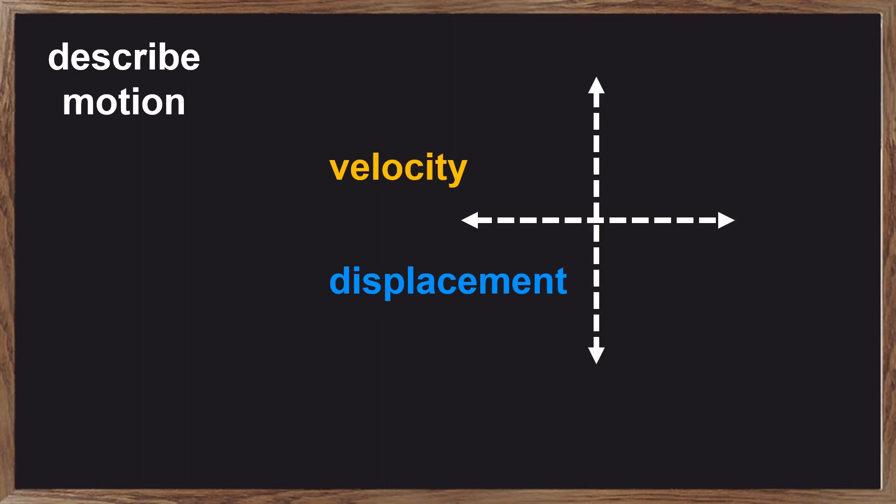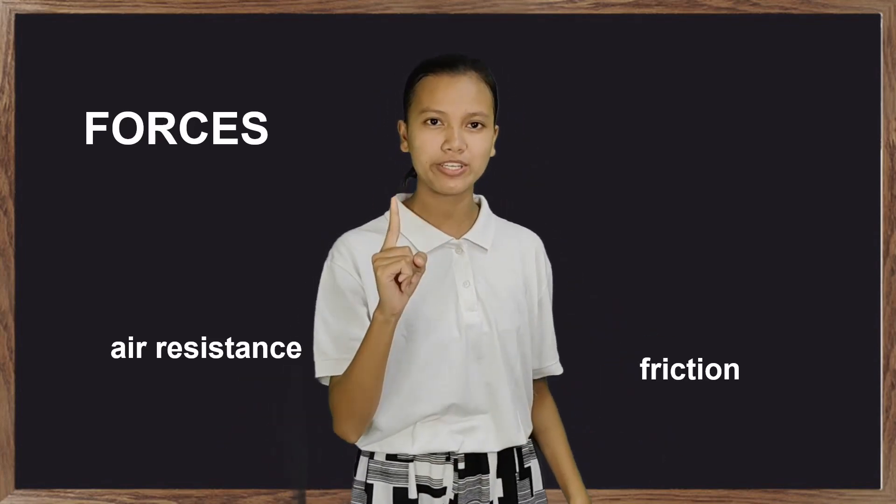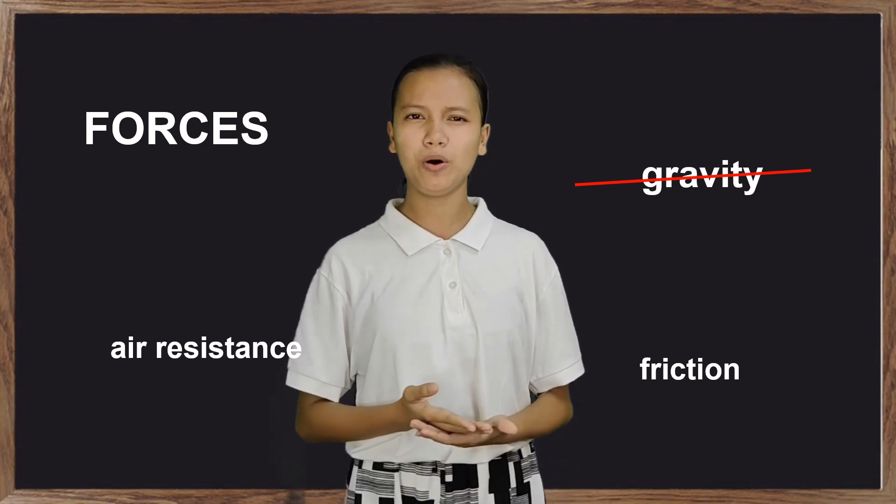In order for us to describe the motion, we must deal with the velocity as well as the displacement. We must find their components along the x-axis and the y-axis too. We will assume all forces, such as air resistance and friction, except gravity, because they are all negligible.